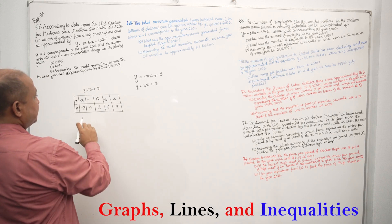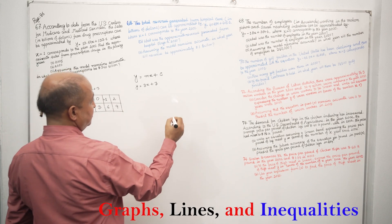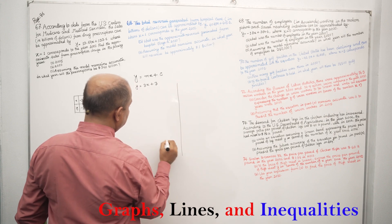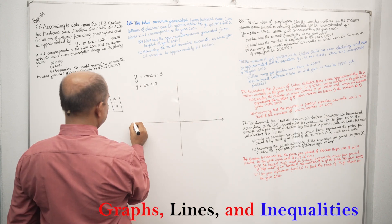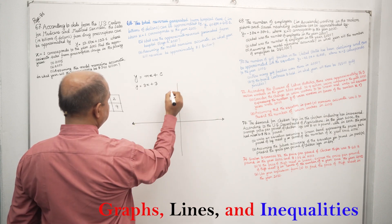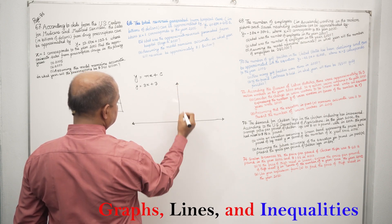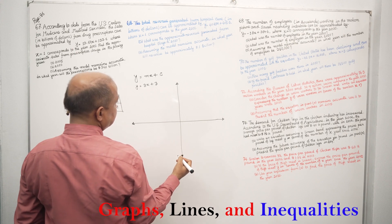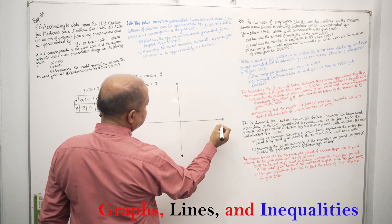Here we have a graph and line. The line is going to be drawn. We know that the graph and line are linked. There are two coordinates and vertices — there is one X and one Y.